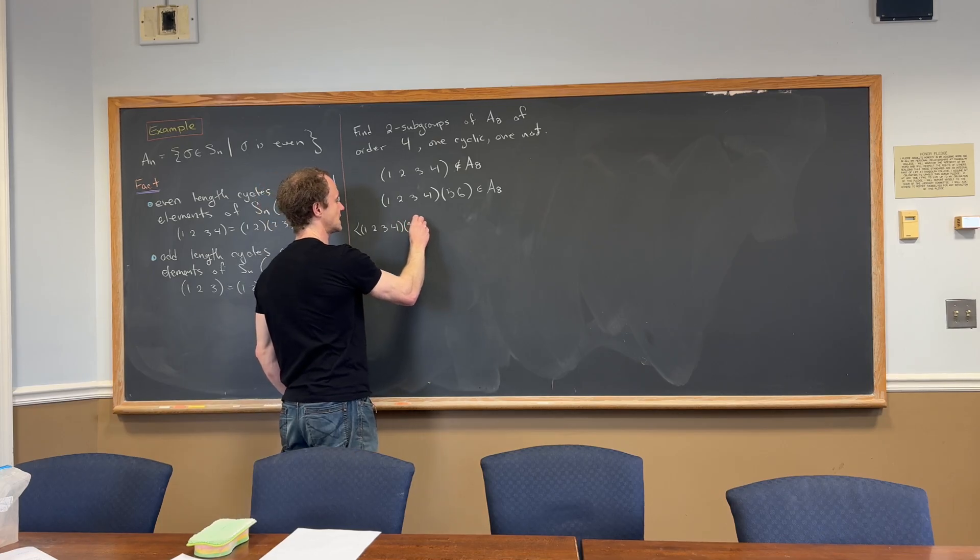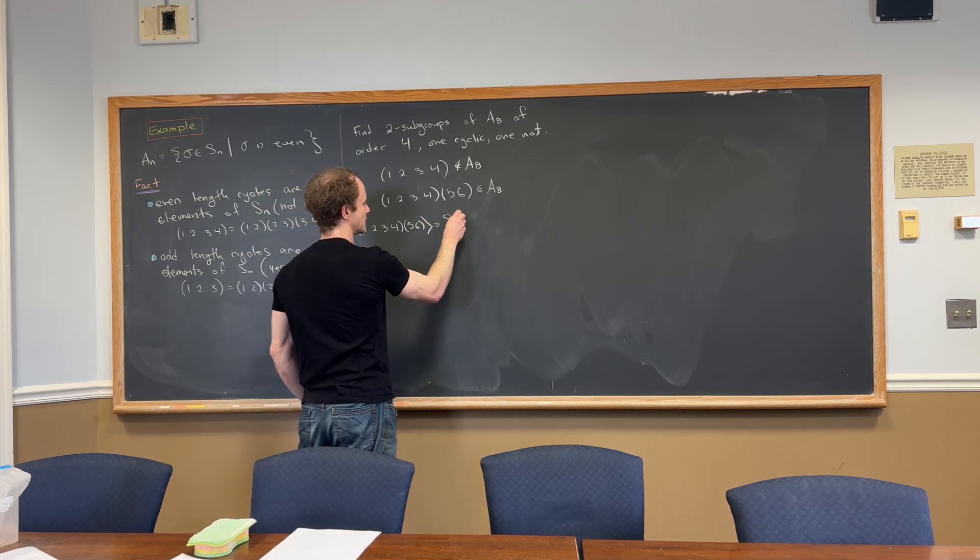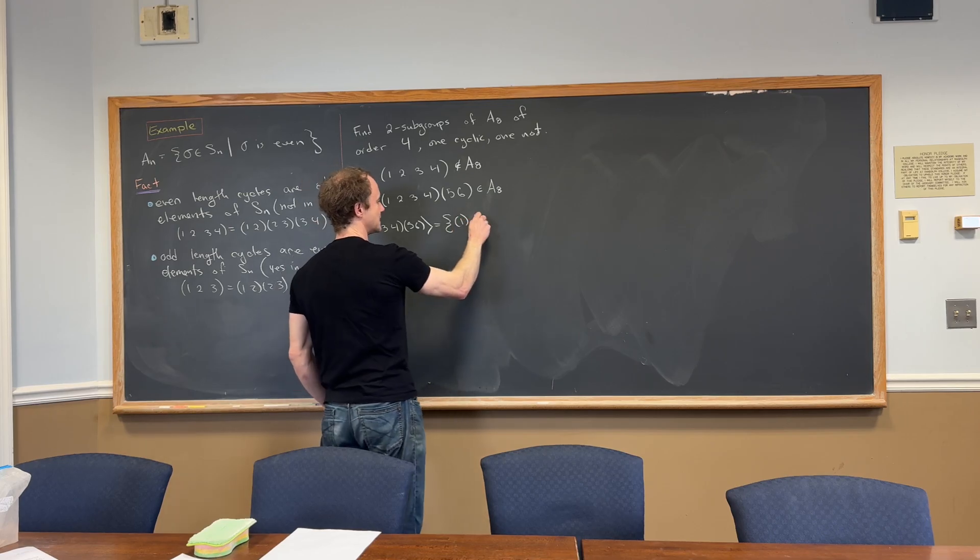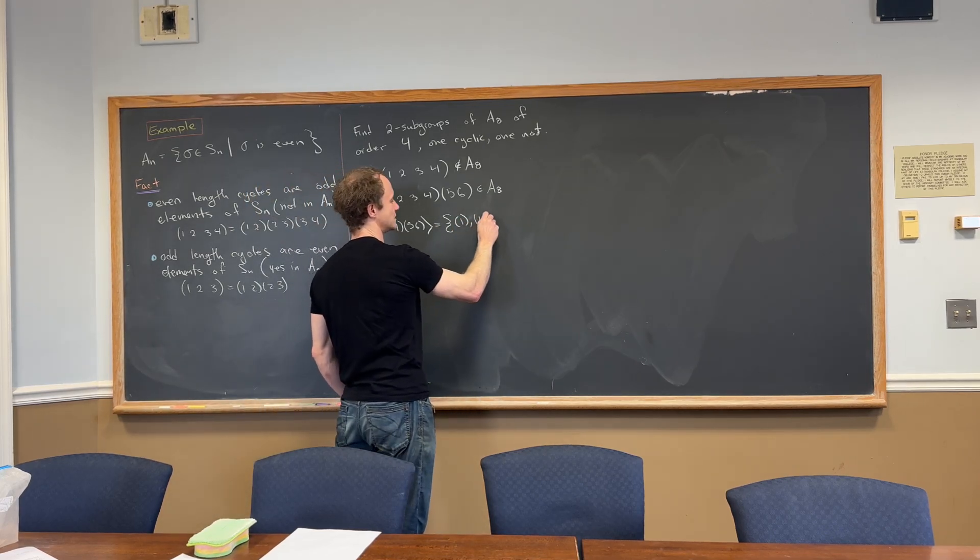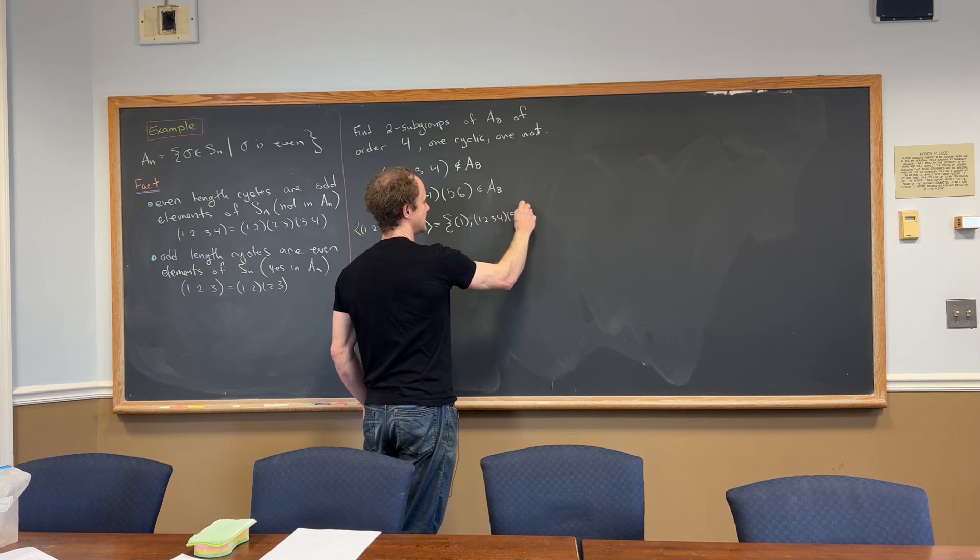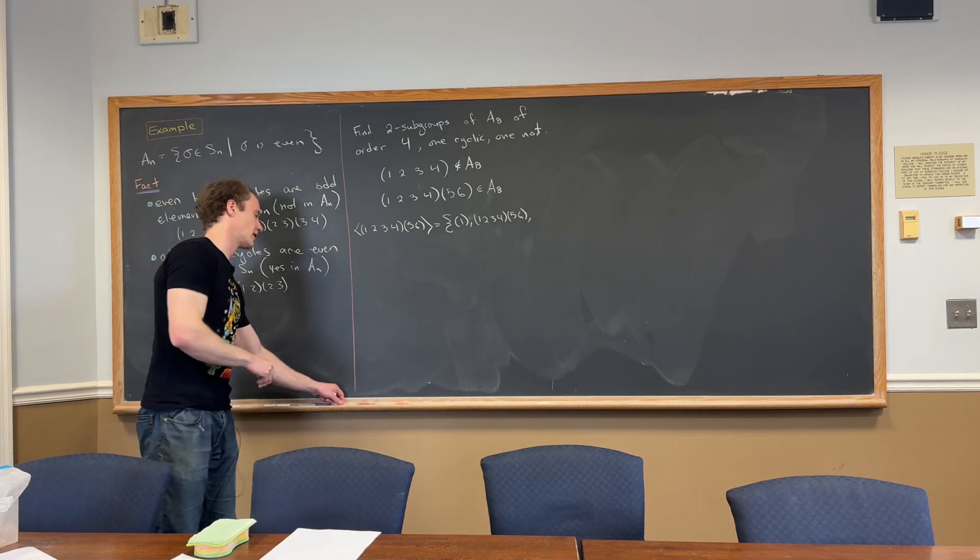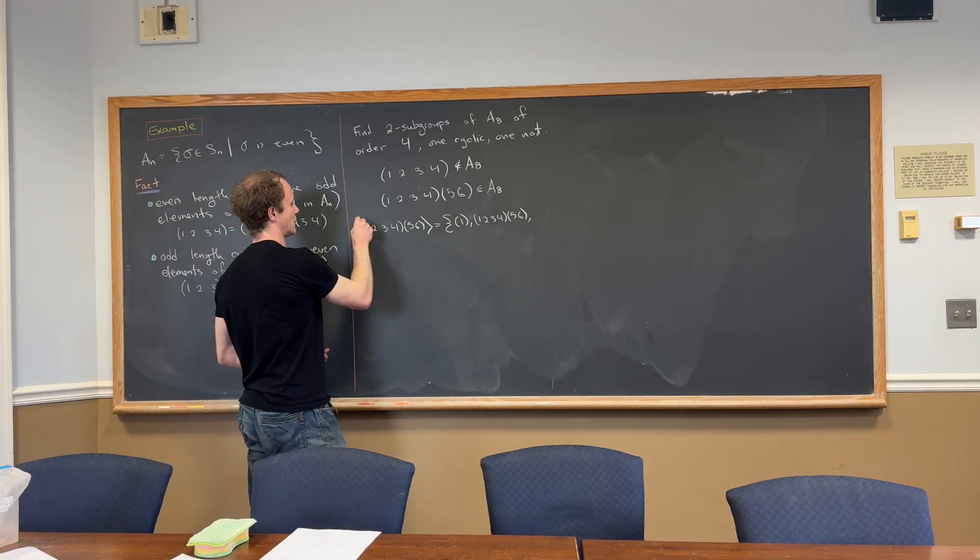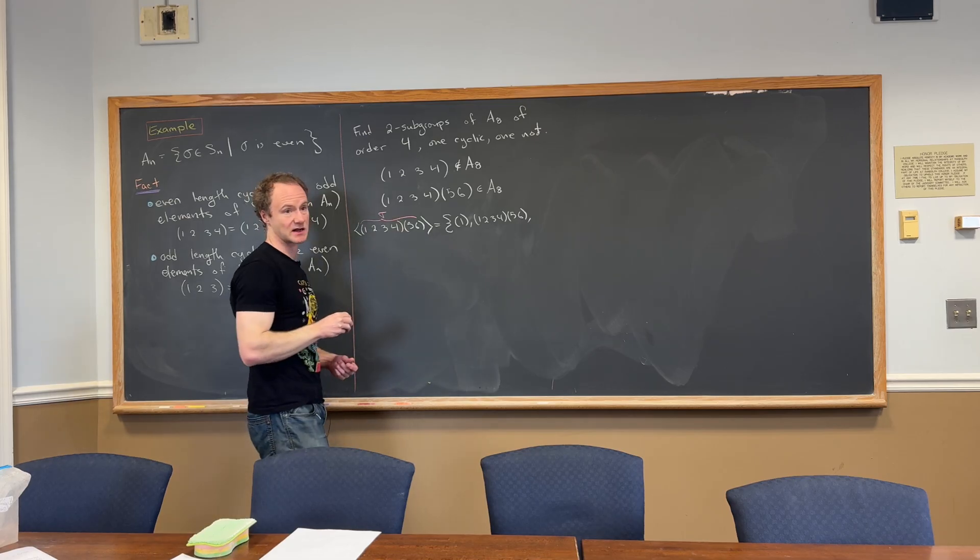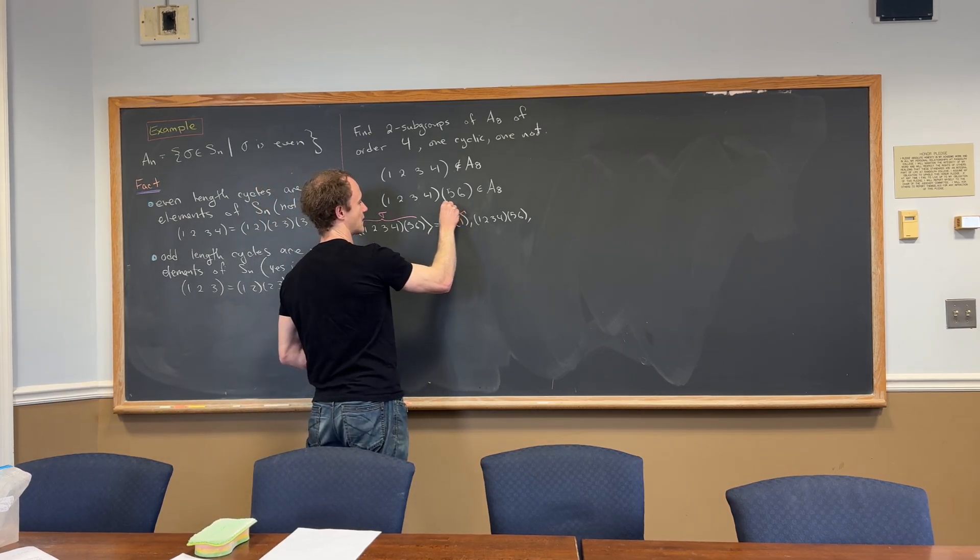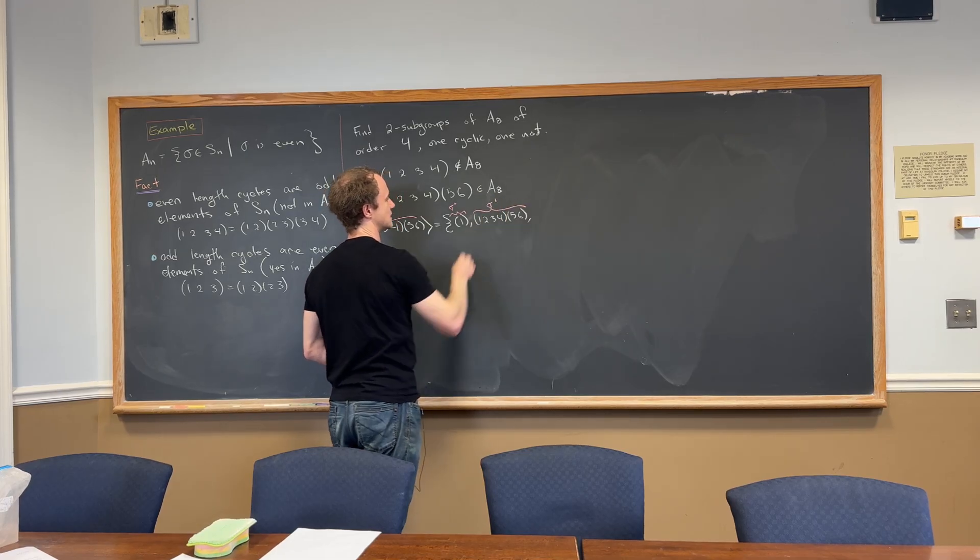So let's generate that cyclic subgroup. So we've got (1,2,3,4)(5,6) generating. So that's going to have the identity. So that's like this to the 0 power. It's going to have (1,2,3,4)(5,6). That's like this to the first power. If we were to really spell out what's going on here, maybe name this guy sigma. And then this one right here would be sigma to the 0. This would be sigma to the 1.